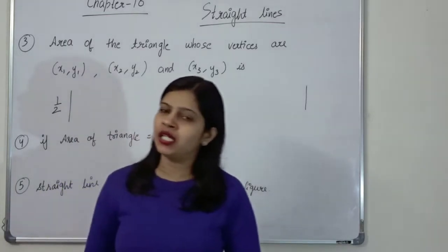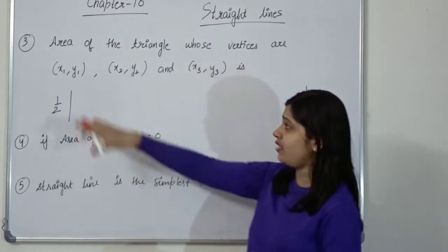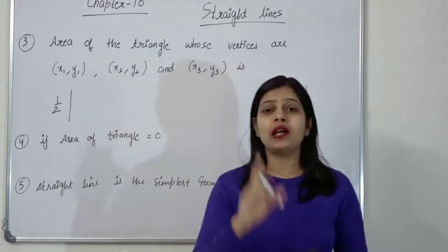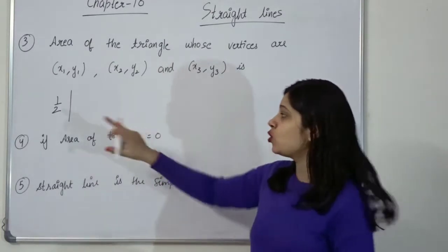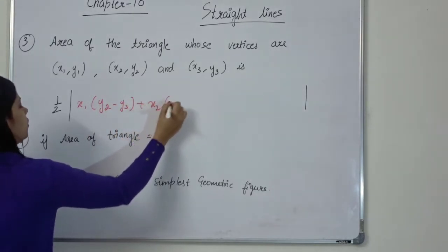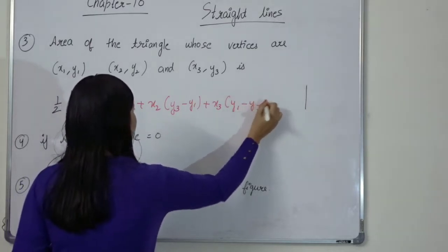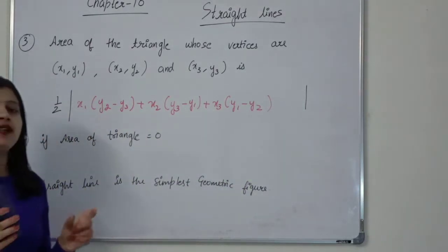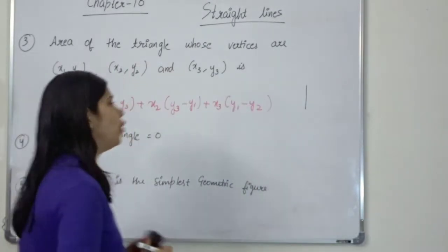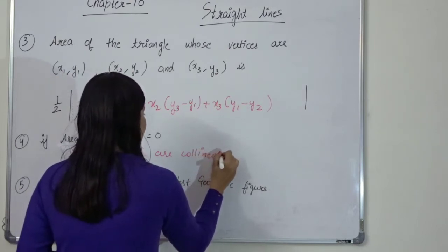Third point: area of a triangle. If we have 3 points with coordinates (x1, y1), (x2, y2), and (x3, y3), the area of the triangle is half the modulus of [x1(y2 − y3) + x2(y3 − y1) + x3(y1 − y2)]. Area is a positive quantity, so we take the modulus. If the area of the triangle equals 0, it means the three points A, B, C lie on the same line — they are collinear.